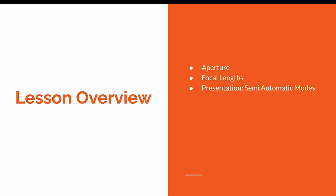I'm going to talk about semi-automatic modes on your camera, because there are certain things you need to understand about them. We're covering aperture priority this week, and we're going to talk about exposure and eventually progress to shooting completely manually. I'll introduce the subversive elements of exposure we'll be looking at, and discuss the meter, as well as the practical task for Tuesday night's session.